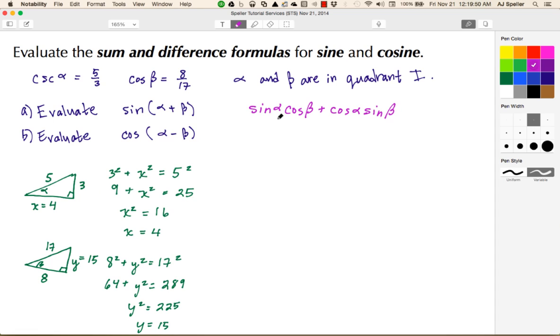Now that we've got the special triangles, we can figure out sine and cosine for each angle. Let's begin with sine alpha. The relationship for sine is opposite over hypotenuse, so this first value is 3/5. We multiply that by cosine beta, which is adjacent over hypotenuse, so that's 8/17. Then we add cosine alpha, which is 4/5, times sine beta, which is 15/17.